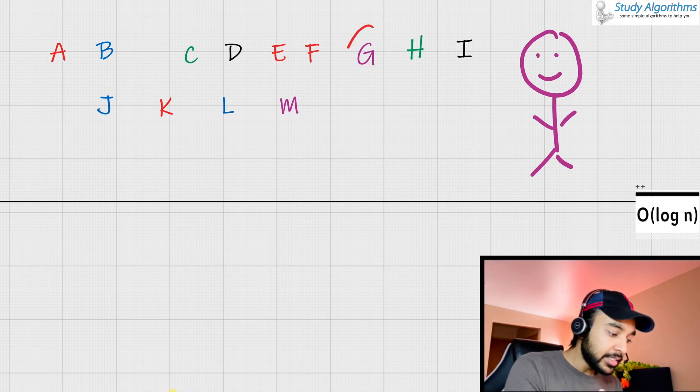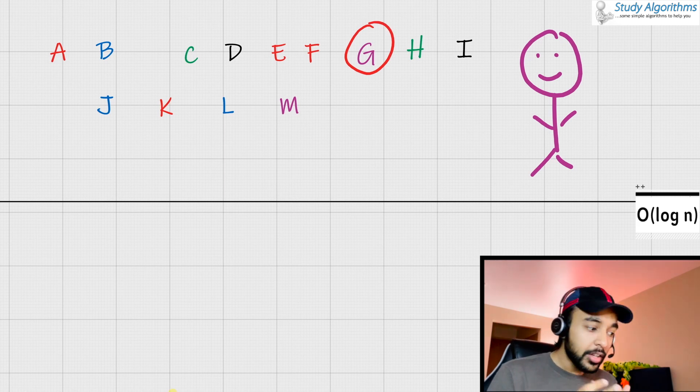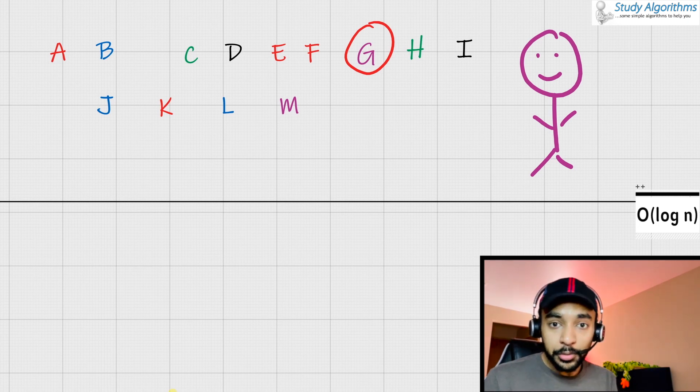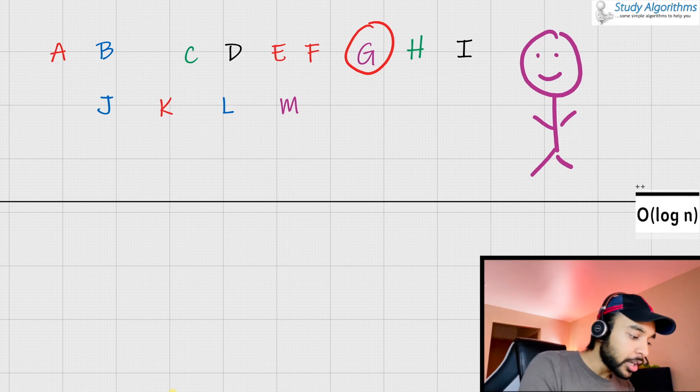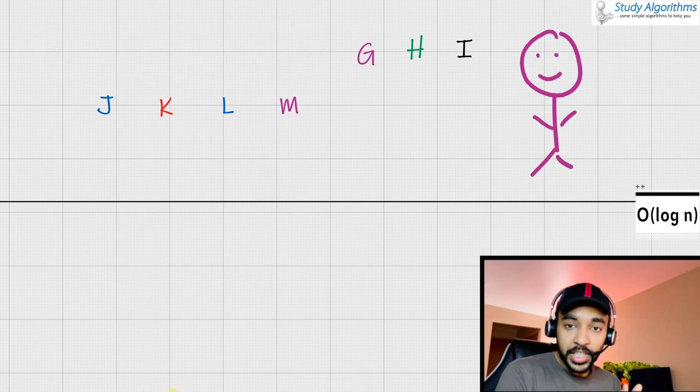Going forward, since G lies in the middle, you can ask me if the character comes after G or before G. I say to you that it comes after G. So, the next thing you can do is you can get rid of all of these characters. You see how the sample space is reducing into half?